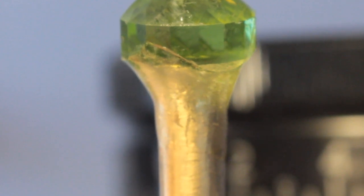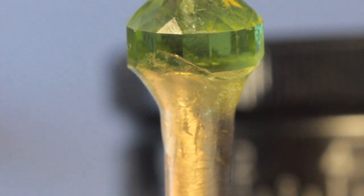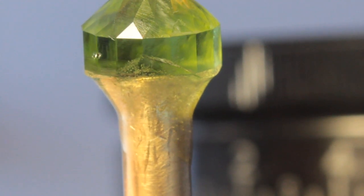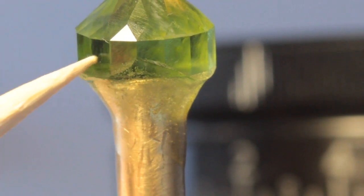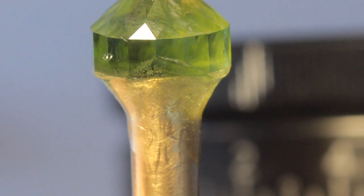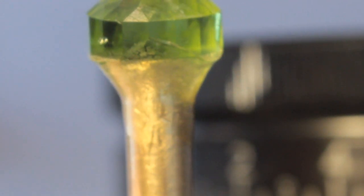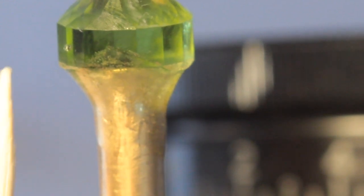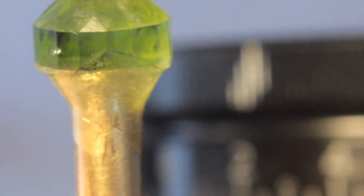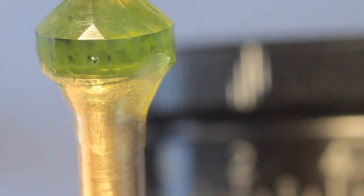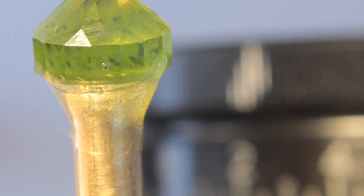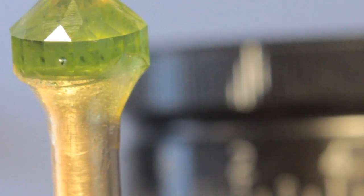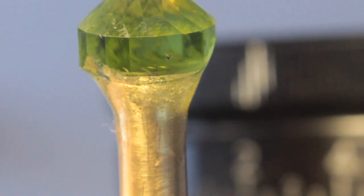I wanted to show you what a typical peridot inclusion called a lily pad looks like. I was hoping not to find any because the rough I picked out appeared to be clean. But this is a lily pad right here. It's black and then as the light hits it just right, it forms a circle around that black spot like a lily pad. Fortunately, this will be easily cut off because we'll be cutting inward on the crown and that's near the surface. When you buy peridot, if you have a lot of these black spots, black lily pads, you're going to have trouble polishing your peridot. So try to buy rough peridot without inclusions or lily pads.